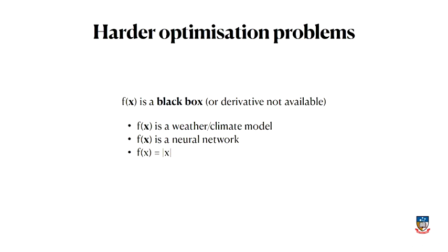You might also have a complicated arrangement of neurons in a neural network, or some machine learning model that wants to output whether an image is a cat or a dog. It's technically not always impossible to differentiate these things, but it might be very unpleasant to do so. There are even mathematical functions you can write down that you can't differentiate.